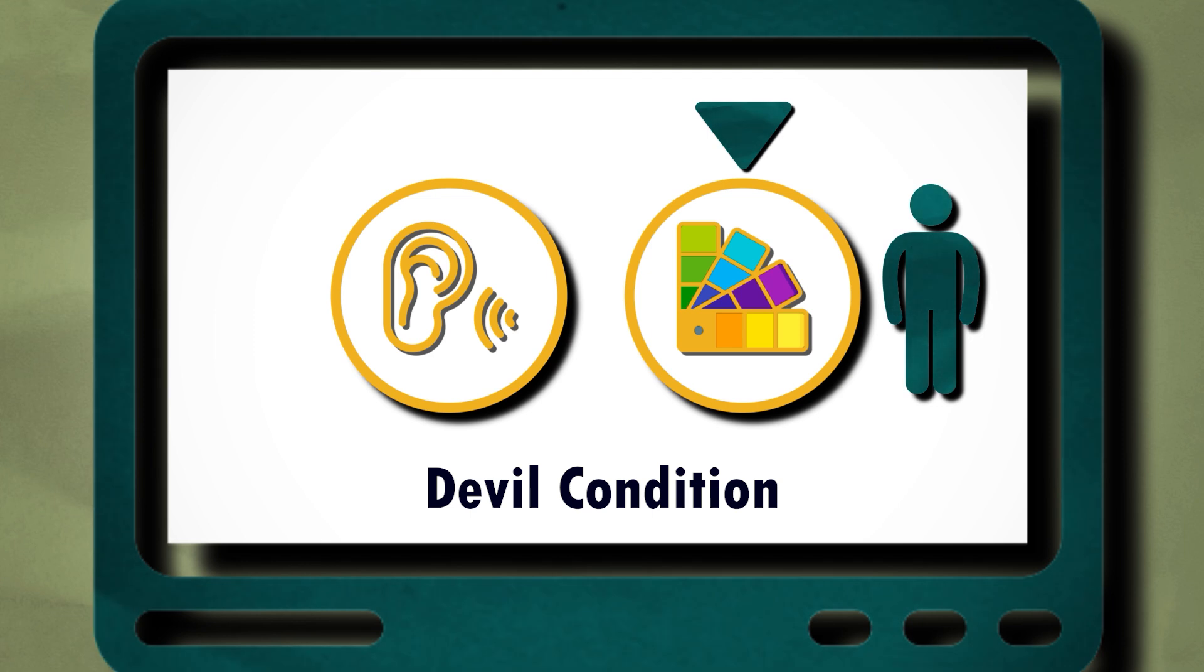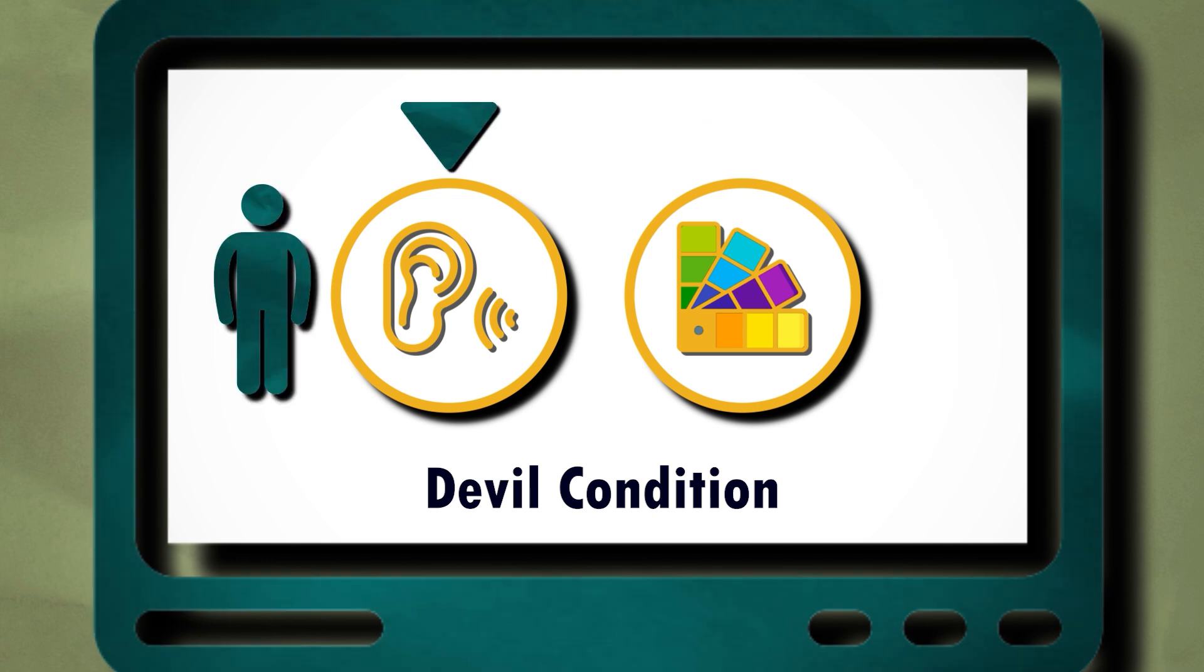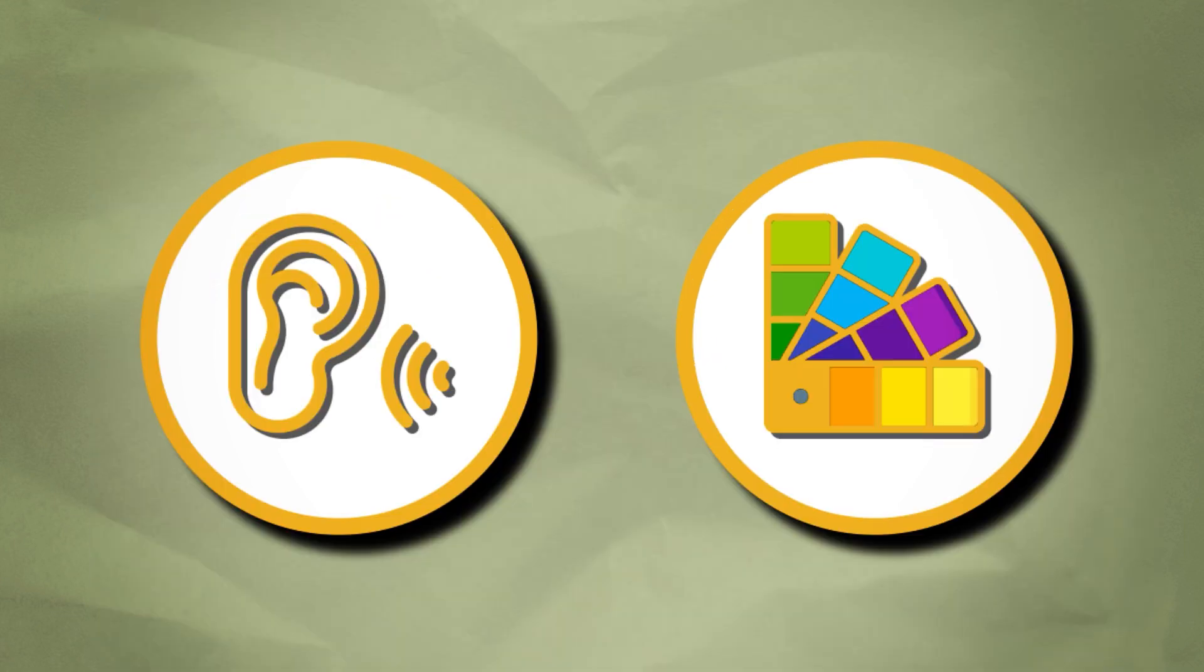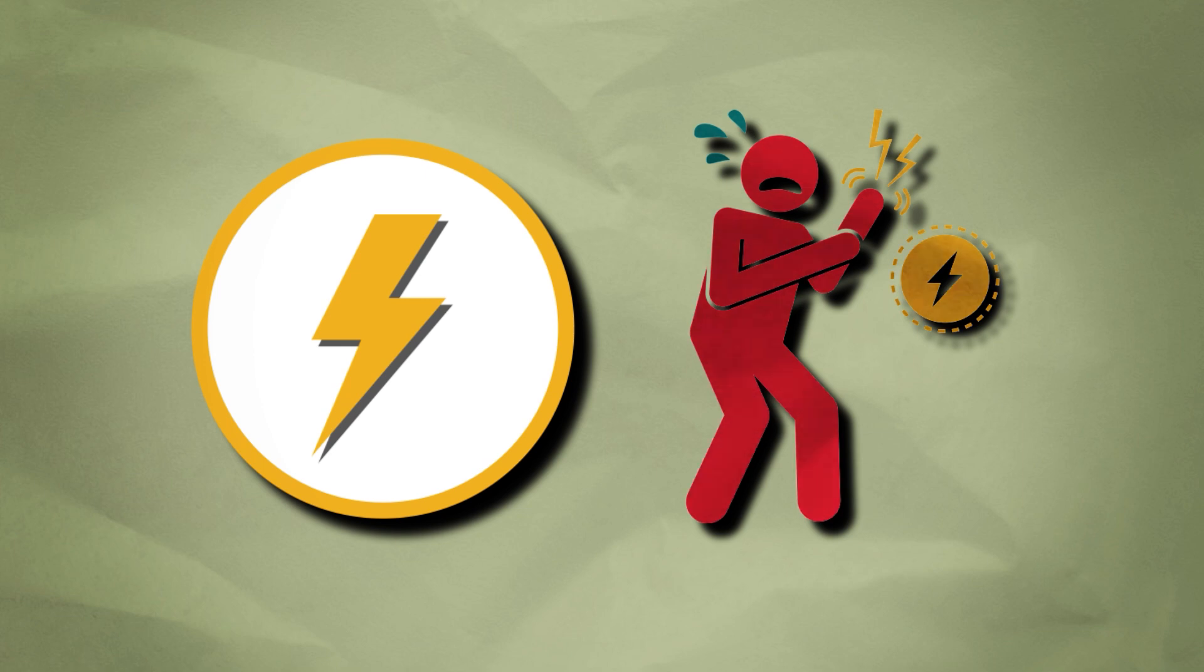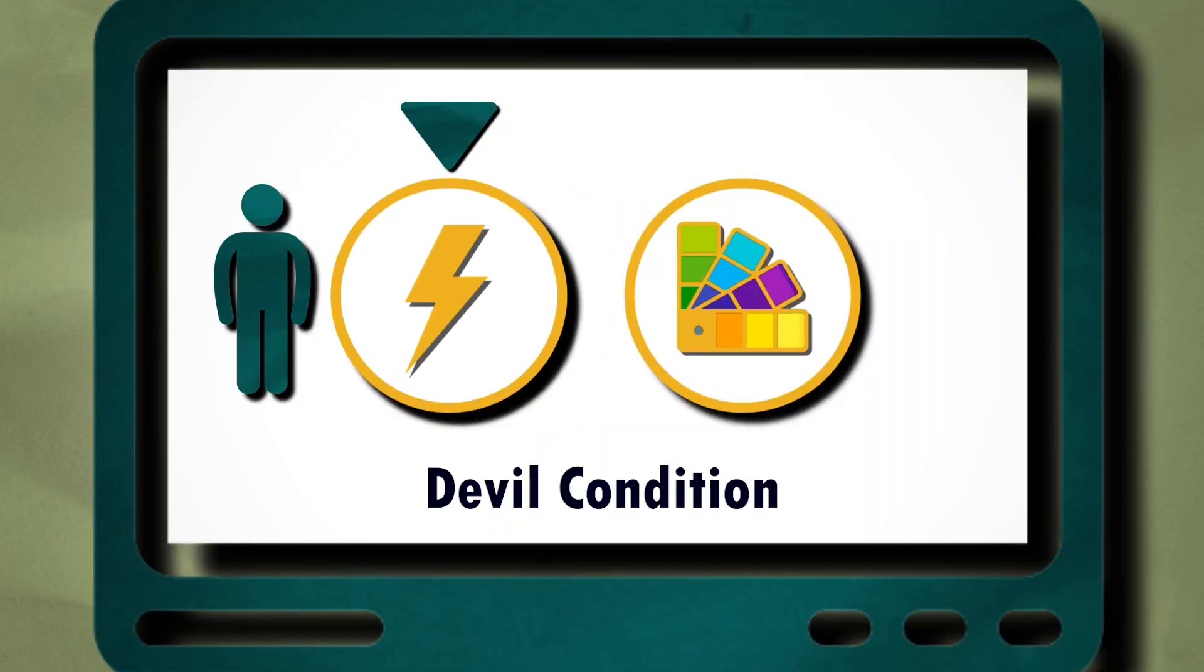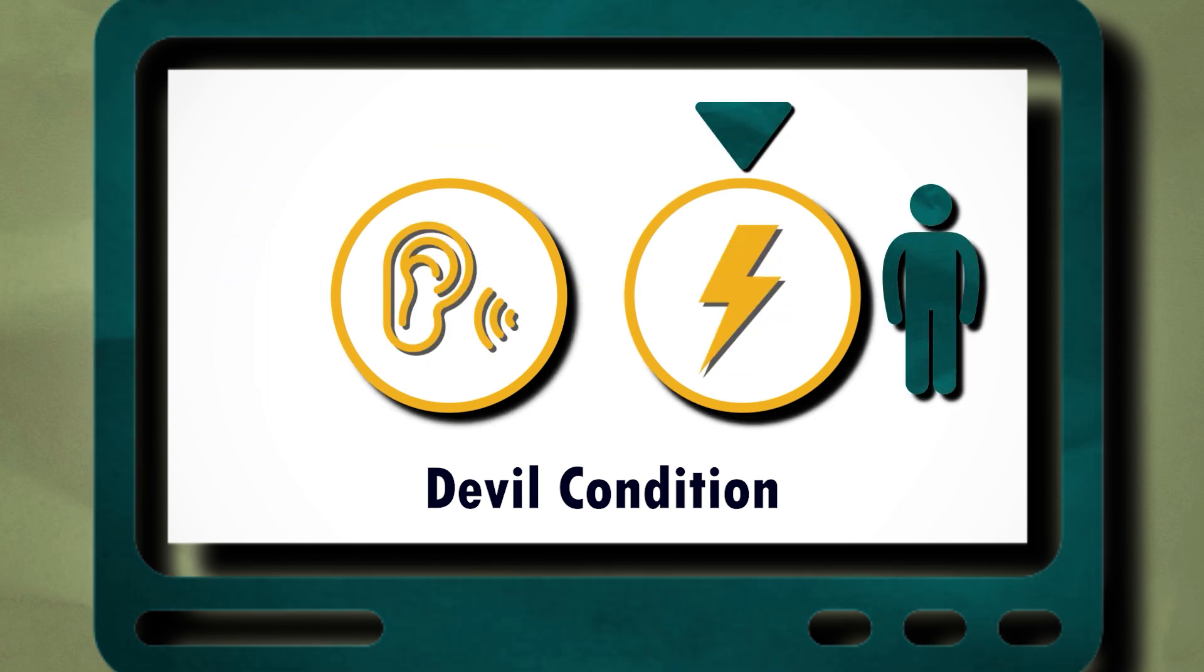They would be able to see the different tasks and which one their partner chose for them. While most of the tasks were harmless, one of them delivered a painful electric shock to the participants. Over and over again, the participants watched as the study partner deliberately chose for them to get shocked, even though there was always a less painful option available.